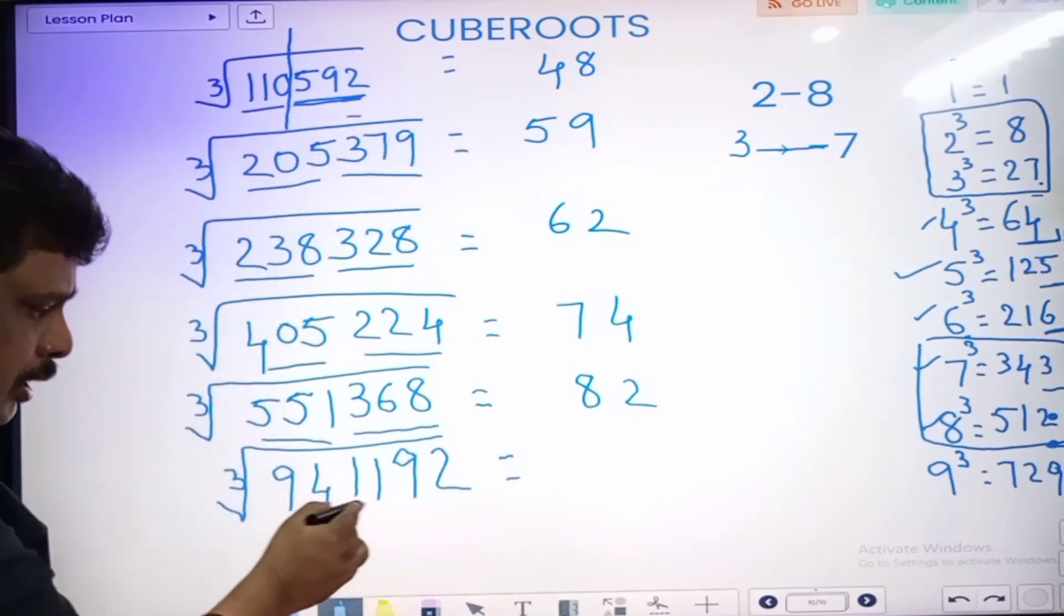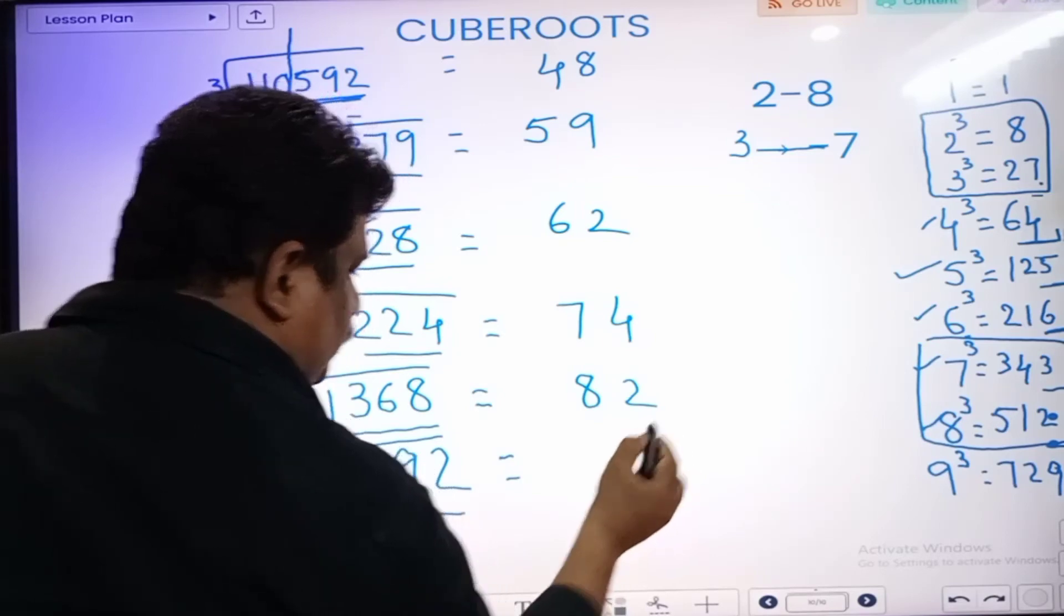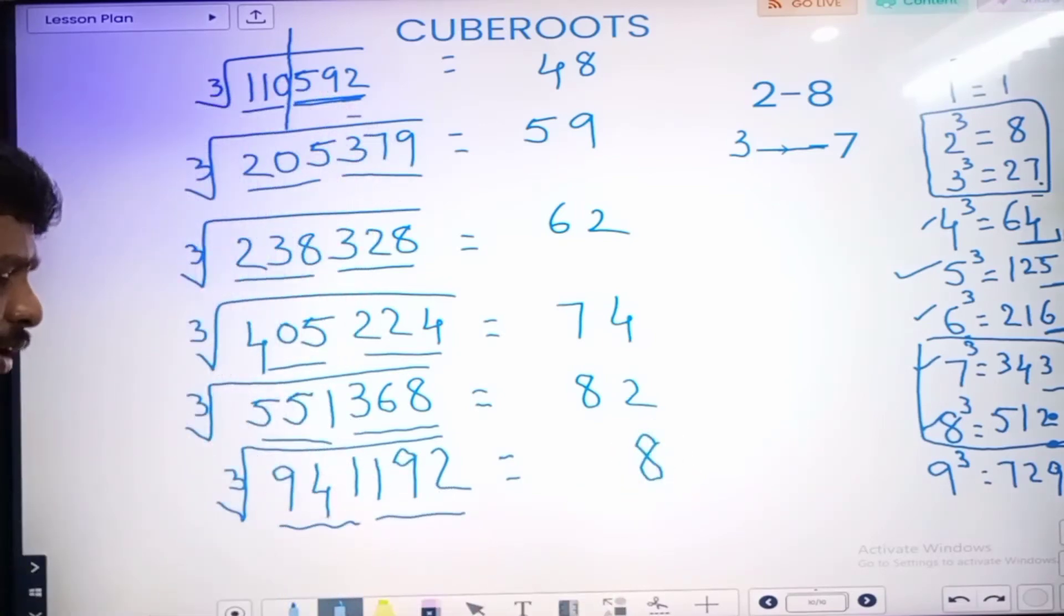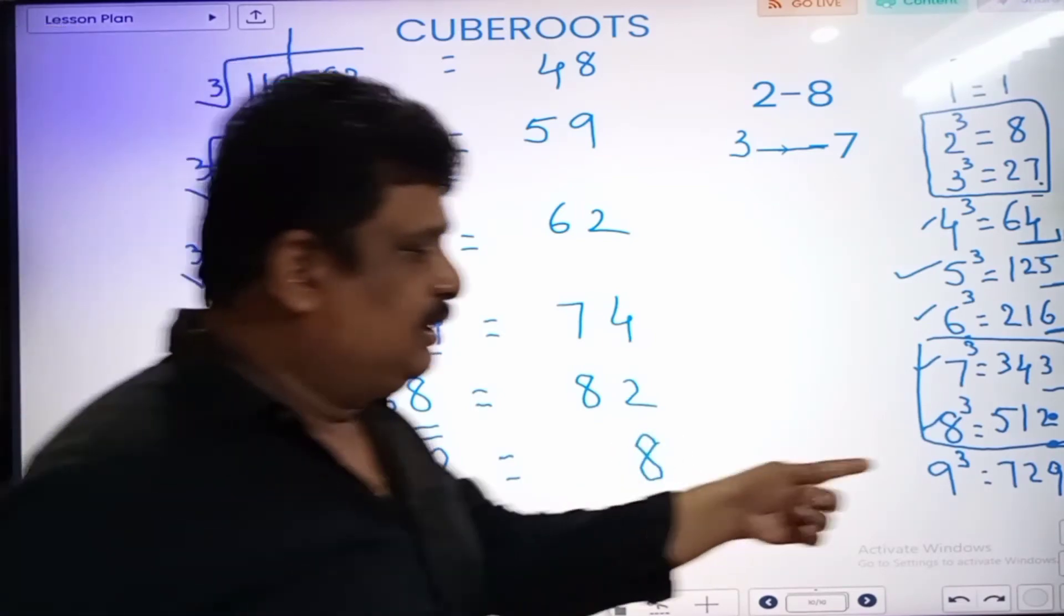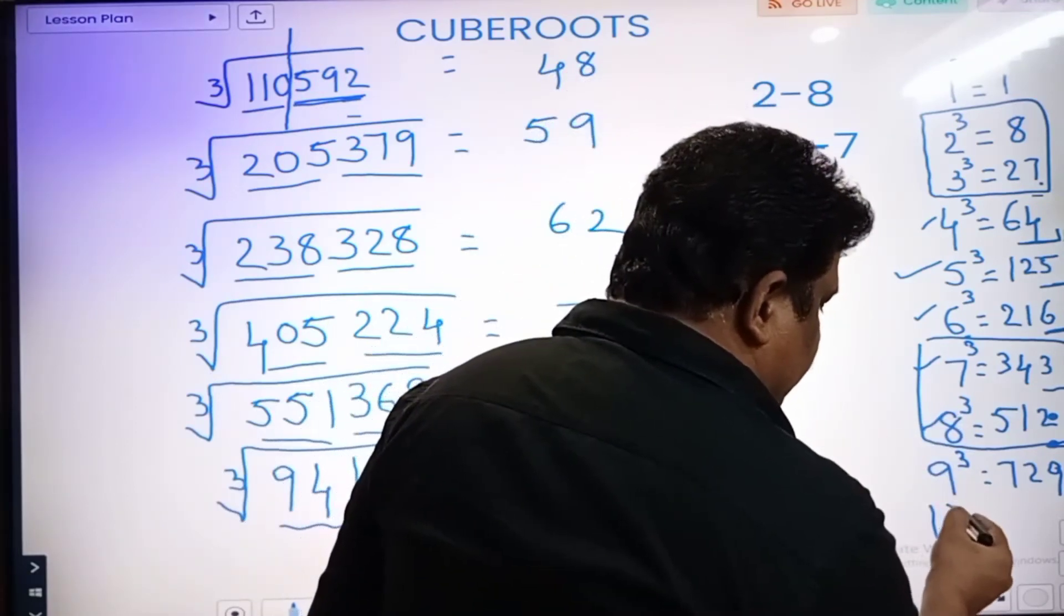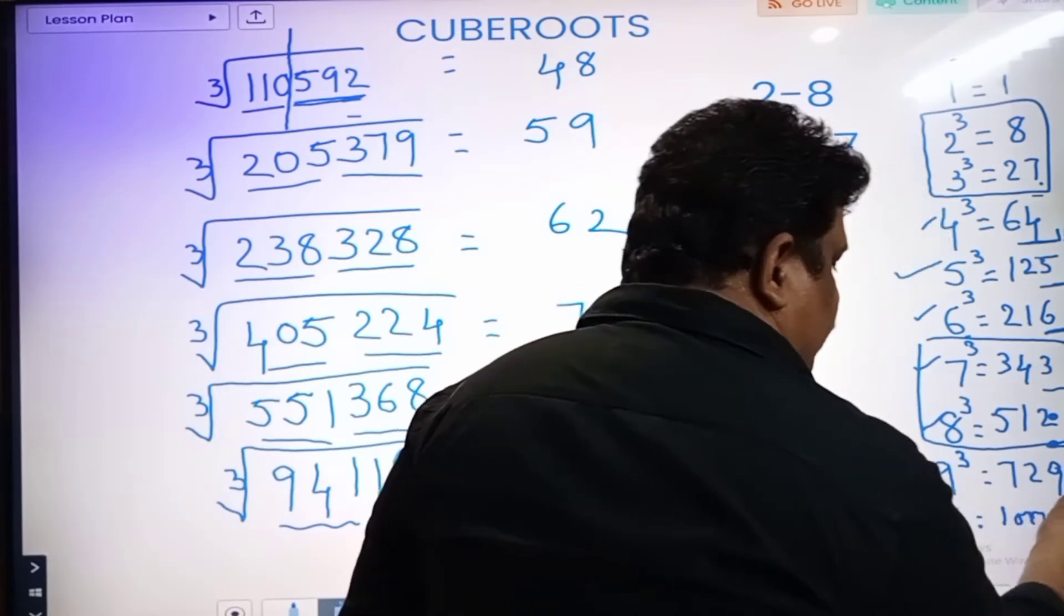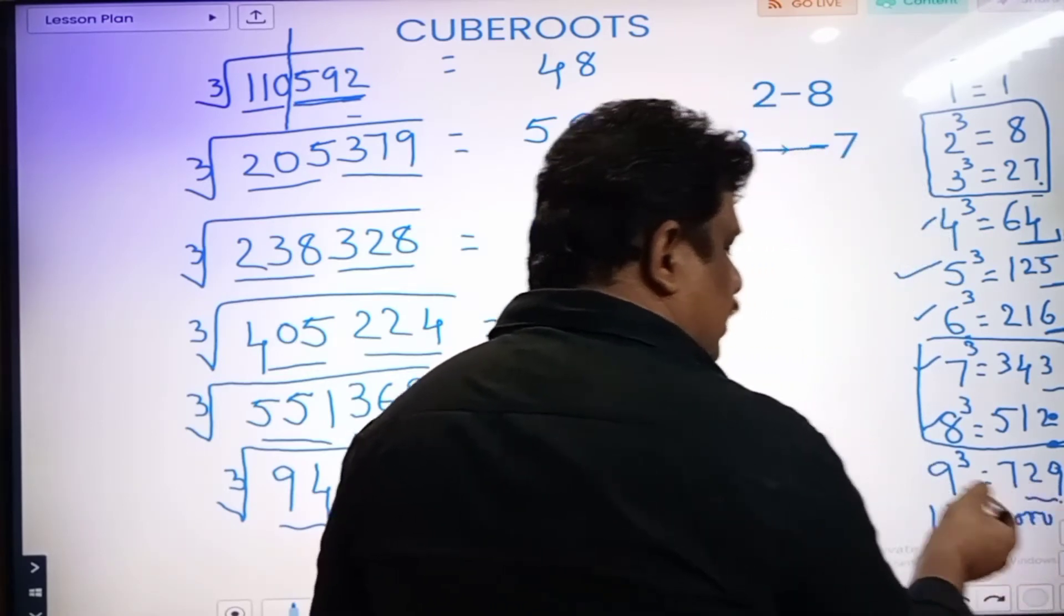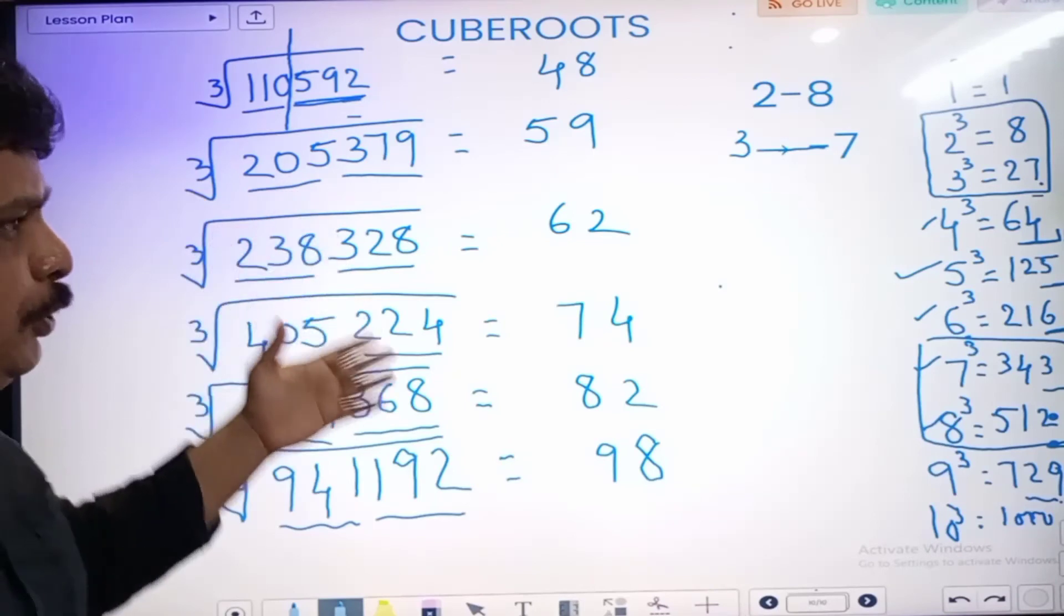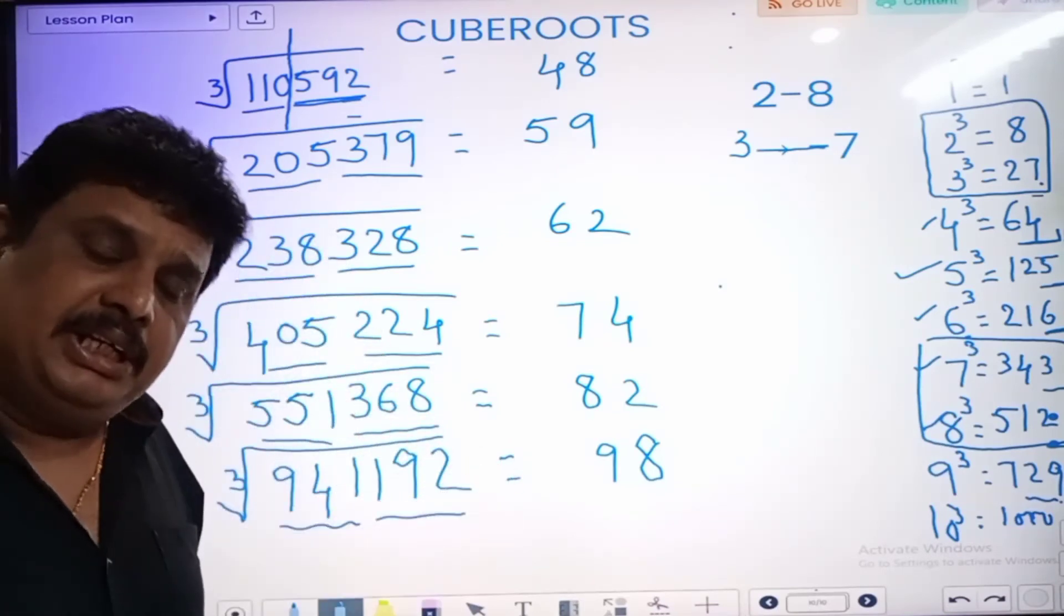Next one. 3 digits. Last digit 2. And then 8. The remaining: 941. 941. Means 9. 10 cubed. In between 10 cubed, 1000. So in between 8, less value means 8. The cube root is 98.